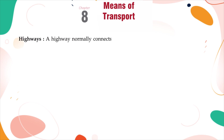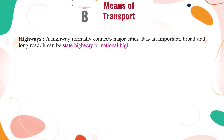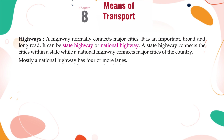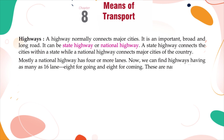Highways: A highway normally connects major cities. It is an important, broad, and long road. It can be a state highway or national highway. A state highway connects cities within a state, while a national highway connects major cities of the country. Mostly, a national highway has four or more lanes. Now, we can find highways having as many as 16 lanes — 8 lanes for going and 8 for coming. These are named differently in different places, like freeways, expressways, etc.